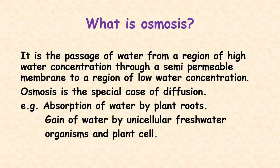What is osmosis? It is the passage of water from a region of high water concentration through a semipermeable membrane to a region of low water concentration. Osmosis is a special case of diffusion. For example, absorption of water by plant roots, and gain of water by unicellular freshwater organisms in plant cells.